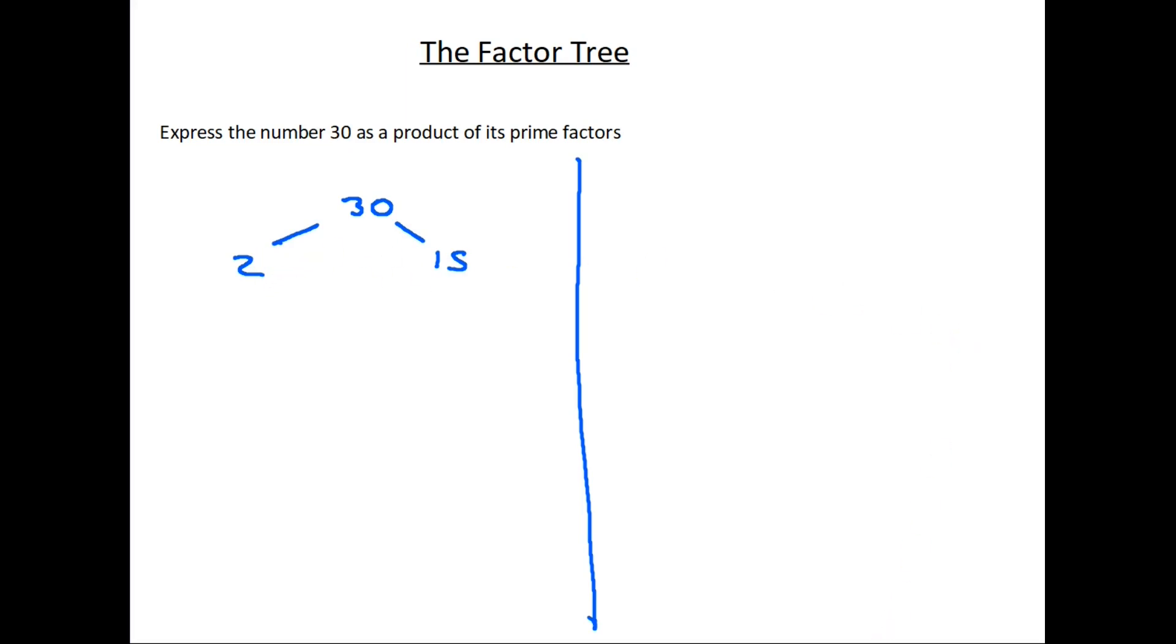Now the trick is to look at this pair and say is either of those numbers a prime number? And the answer of course is yes. Number 2 is a prime number. Number 15 isn't. So the next step is to look at 15 and find a pair of factors for 15. So if we look at 15, a pair of factors are 3 and 5. 3 times 5 is 15. Now we have some new numbers to look at and we ask ourselves is that a prime number? Yes it is. Is this one a prime number? Yes it is. Once we have a prime number at the bottom of every stem we finish.